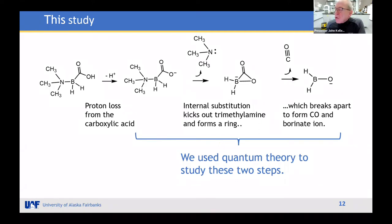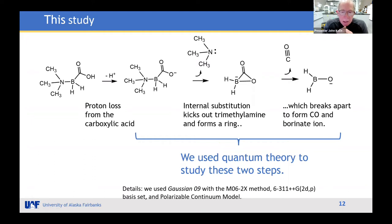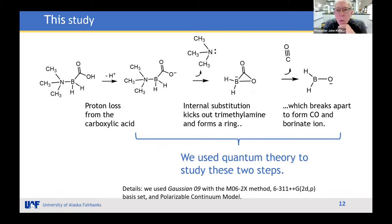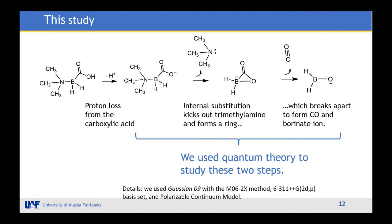The two crucial steps are the splitting of the nitrogen-boron bond and the release of carbon monoxide — this is where the new chemistry happens. For the theory, we used Gaussian 09 software with a density functional method called M06-2X and the 6-31++G(2d,p) basis set. We also used a technique called the polarizable continuum model, which envelops the molecule in a surface that mimics the polarity of water without explicitly showing a water molecule. It turns out you actually do need to include an explicit water molecule, which we investigated in quite a bit of detail.